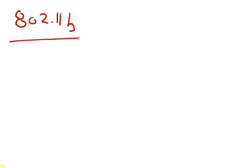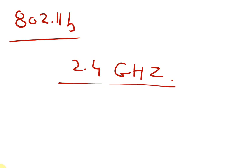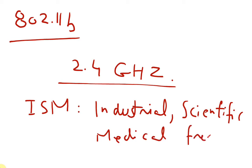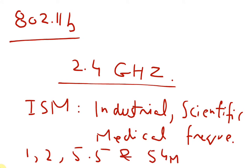Based on the problems with 802.11a, IEEE introduced the 802.11b standard, which operates on 2.4 gigahertz frequency. This 2.4 gigahertz frequency is called ISM, which stands for Industrial Scientific Medical band — a band that small offices and homes can use. This standard supports data transfer rates from 1 megabit per second up to 5.5 and 54 megabits per second.